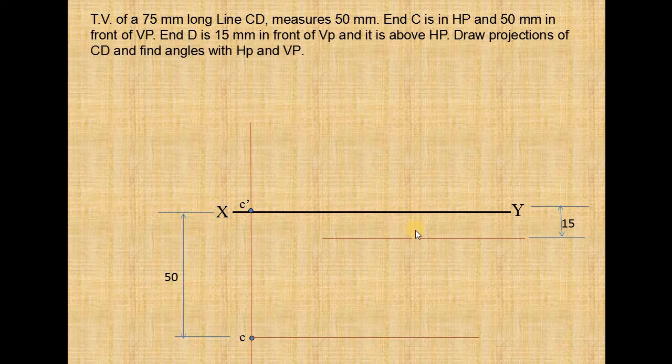The distance between these two lines is 15mm. The given top view length is 50mm. You take 50mm as radius, C as center, draw an arc on this line and name it as d. Now join C and d. This is our required top view of length 50mm.